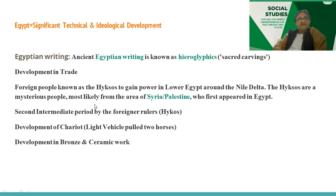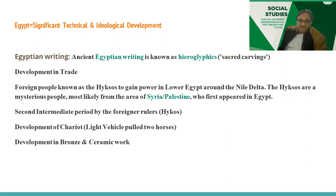Egyptian writing — the sacred carving known as hieroglyphics — and development in trade through the Nile. Foreign people known as the Hyksos — you must know about the Hyksos — gained power in lower Egypt around the Nile Delta. The Hyksos are mysterious people most likely from the area of Syria and Palestine who first appeared in Egypt. During the second intermediate period, under these foreign rulers, there was the development of the chariot — a light vehicle pulled by two horses — which was also used in Greece, in Sparta and Athens, in the Peloponnesian War and the war with Persia. Also note the development in bronze and ceramics, and the art and infrastructure including pyramids as primary sources.